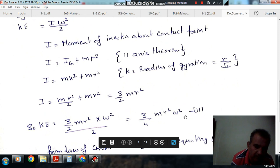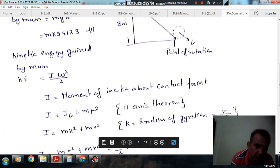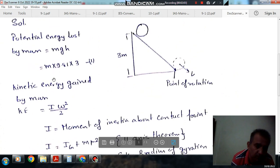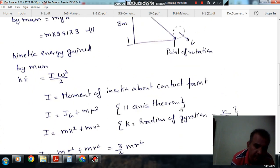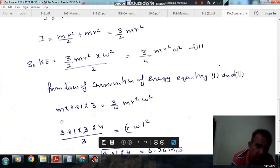We can equate the loss in potential energy and gain in kinetic energy from conservation of energy. Equating these, m will cancel out.